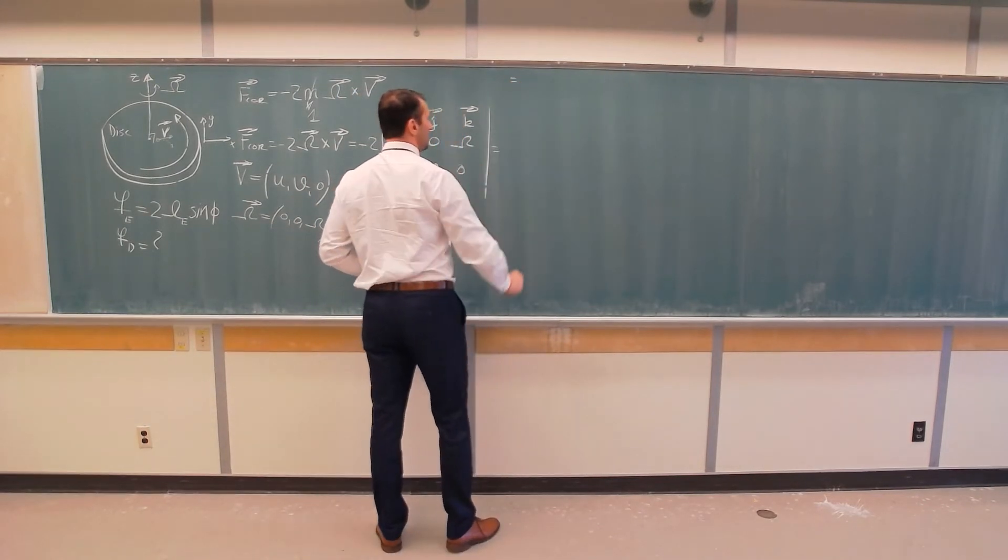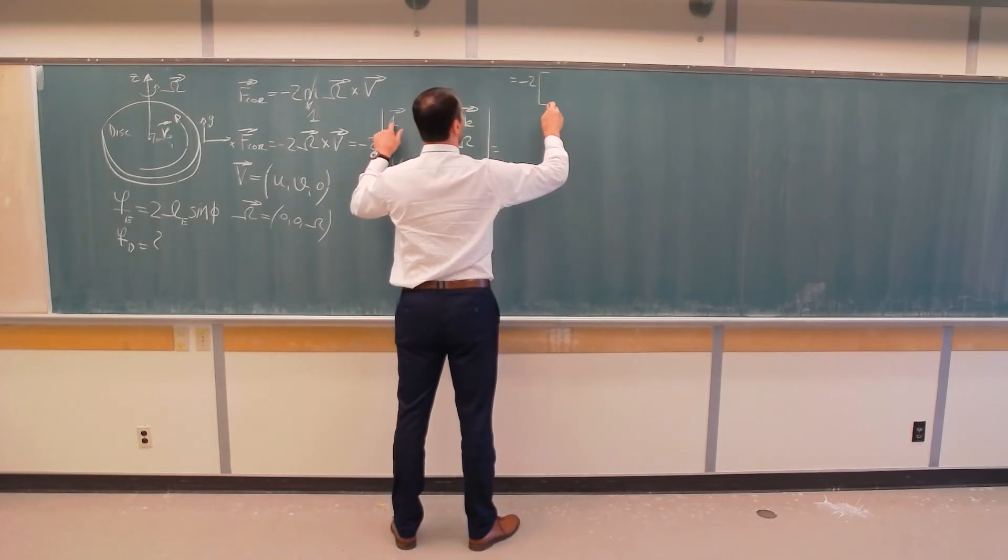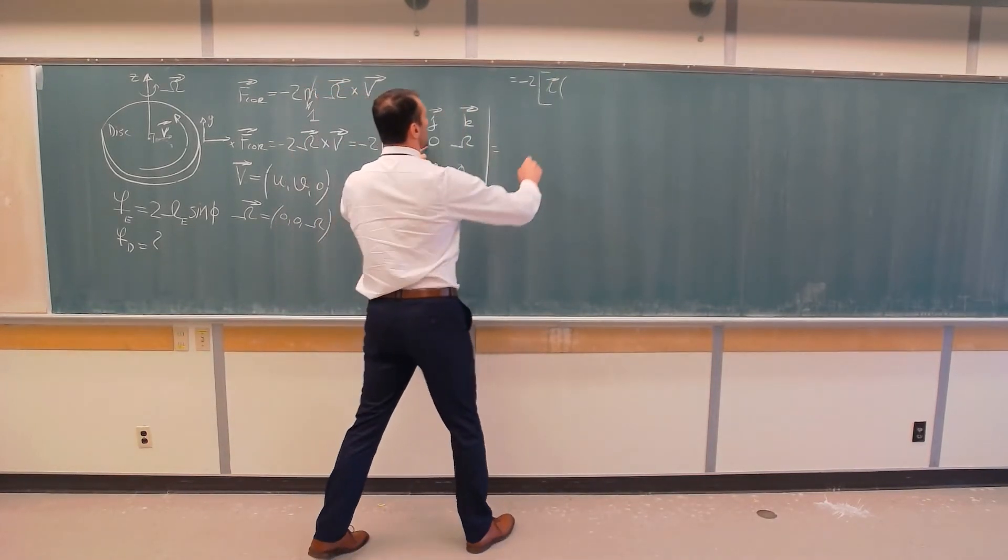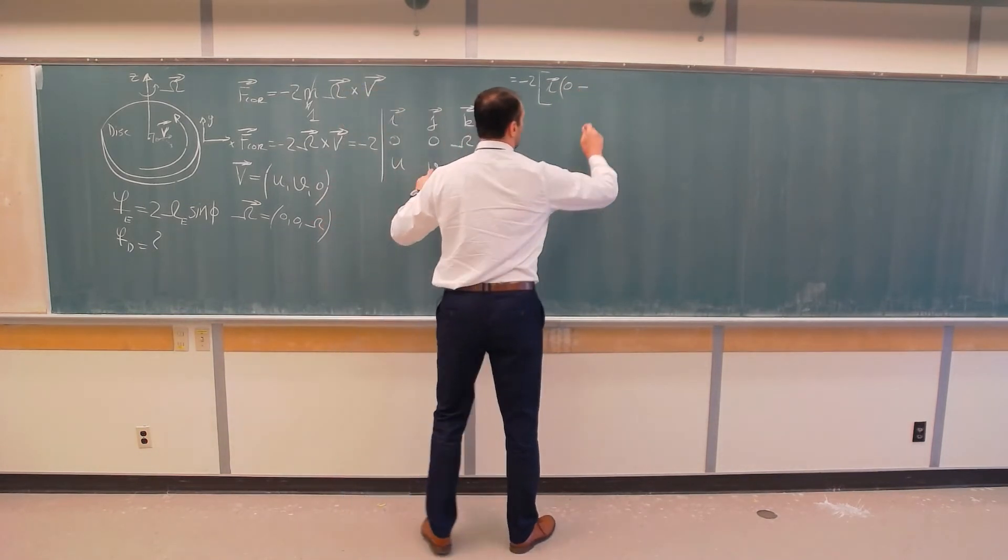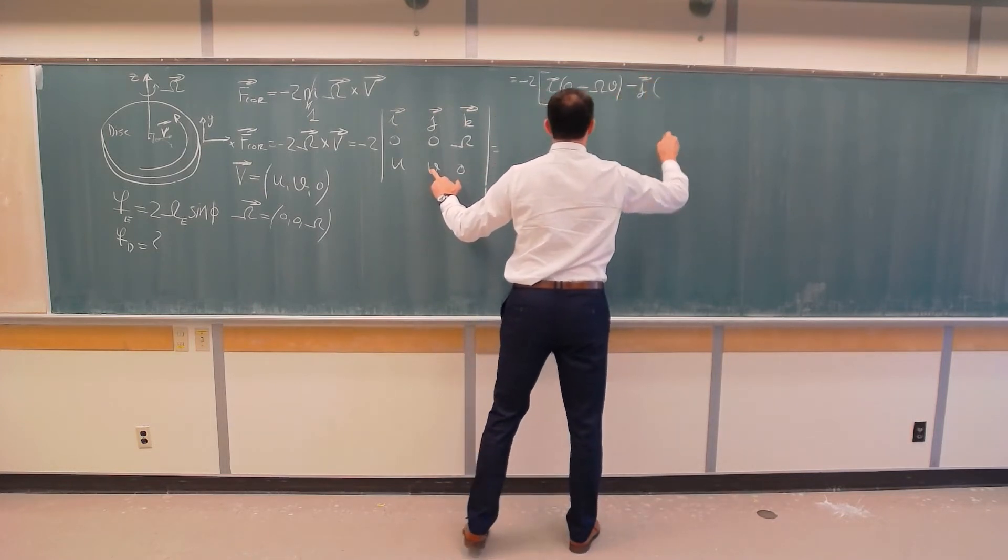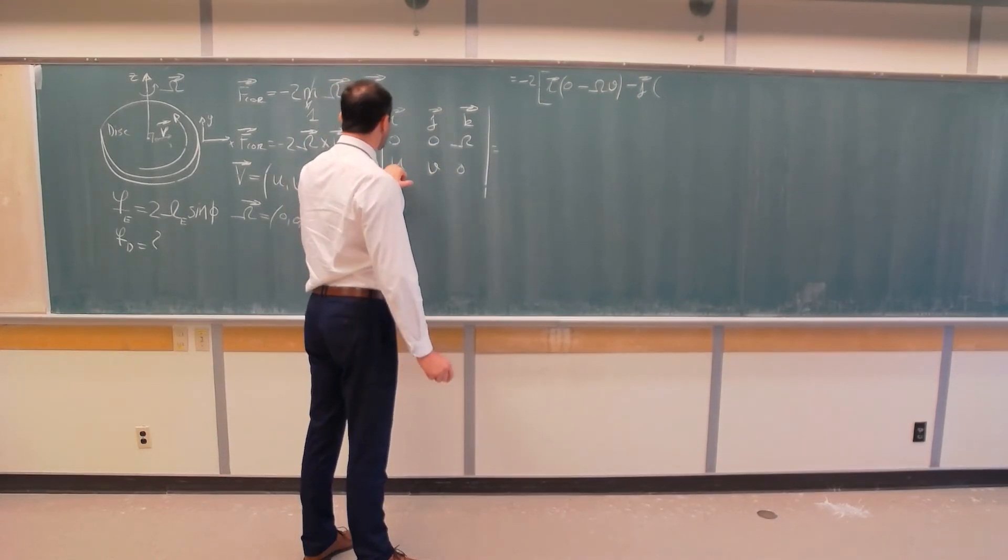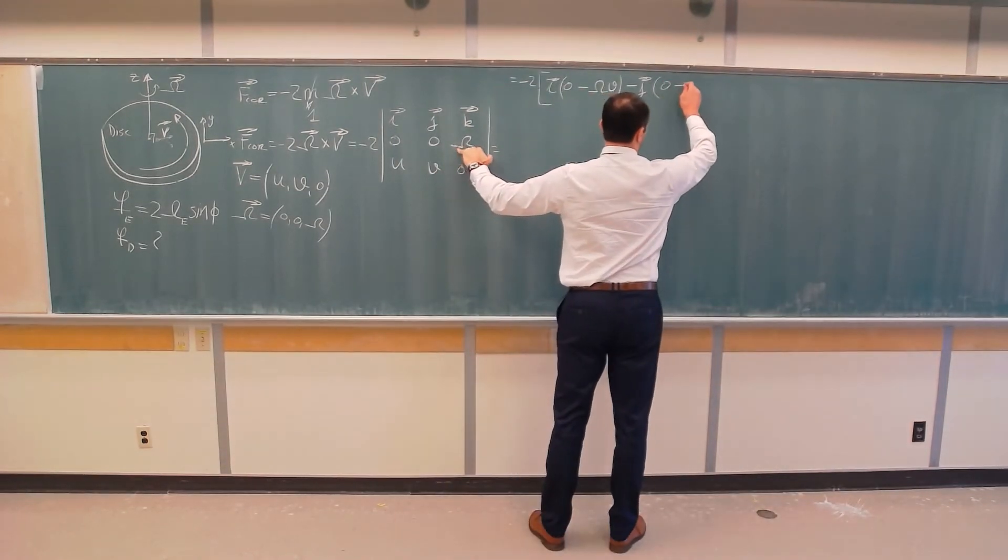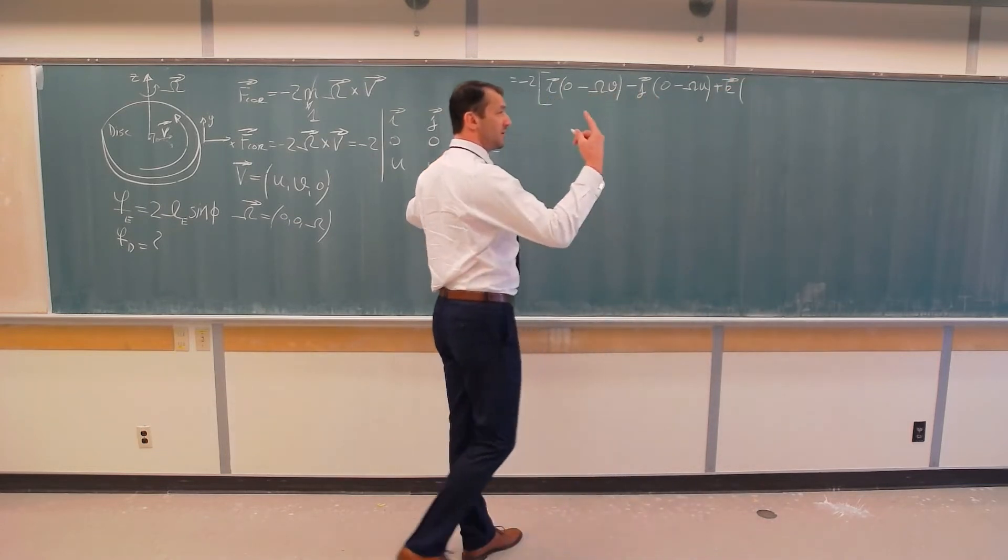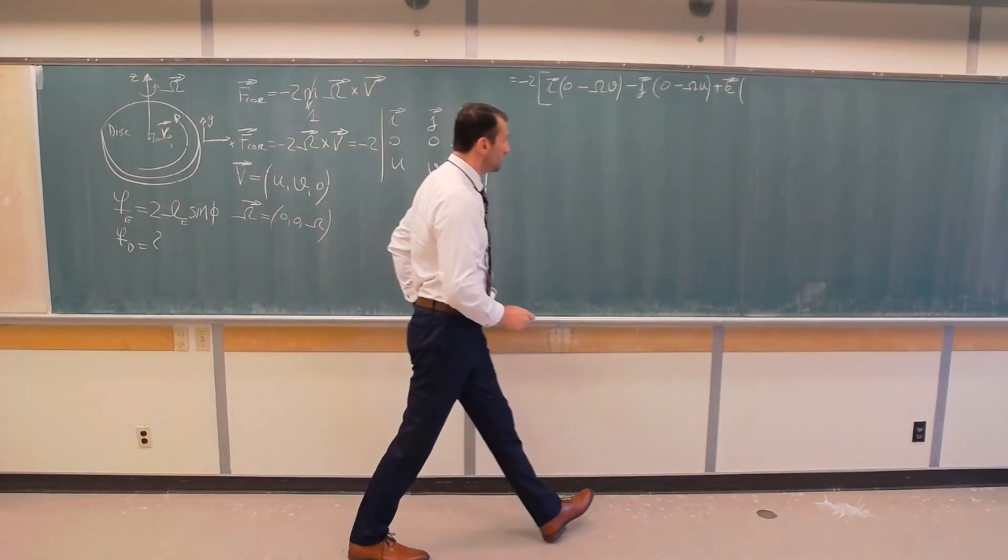Or, this is equal, let's continue here. So, this is minus two that multiplies in the i-direction. So, I cross this column and this row, I will have zero minus omega times v, minus. In the j-direction, I cross this column, I cross this row, I will have zero minus omega u. And plus in the k-direction, which is vertical direction. So, I cross this row, I cross this column, I will have zero minus zero, which is zero.